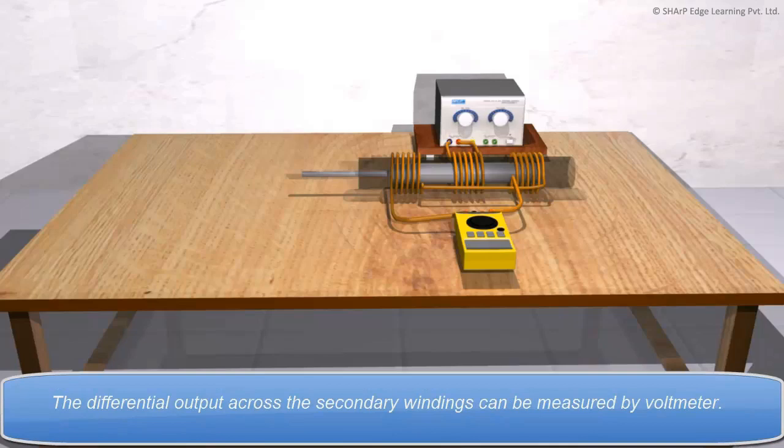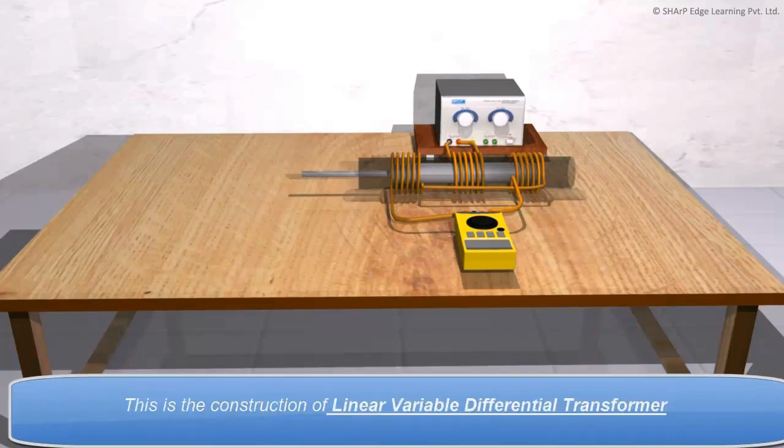The differential output across the secondary windings can be measured by voltmeter. This is the construction of Linear Variable Differential Transformer.